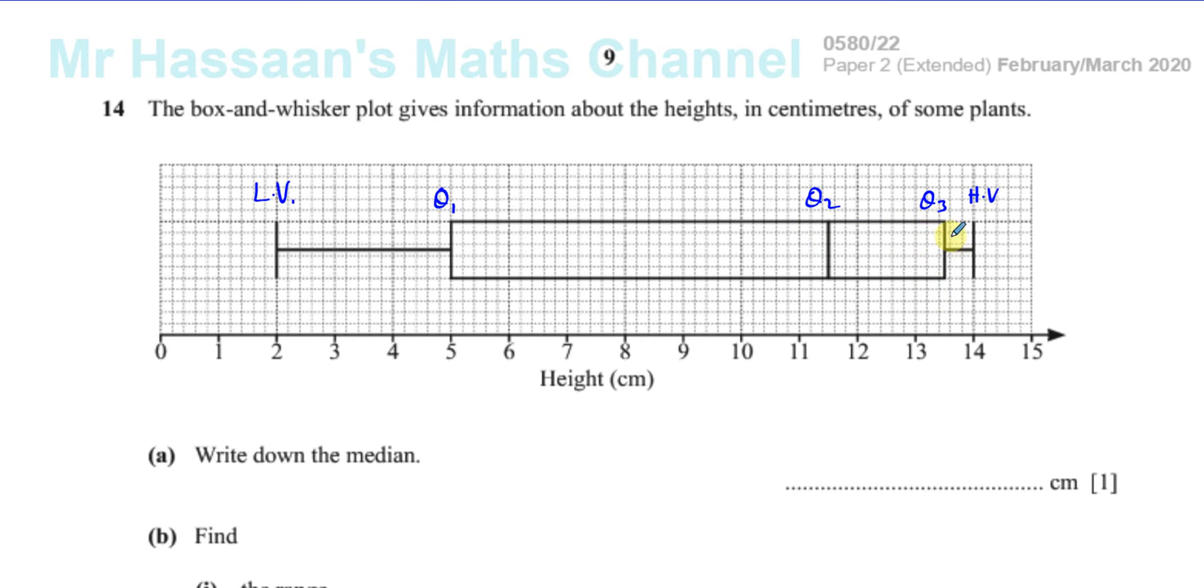And Q3 is kind of the reverse. It's called the upper quartile. In this case, one quarter or 25% of the plants, it's taller than 75% or three quarters of the plants. And it's shorter than a quarter of the plants or 25% of the plants.